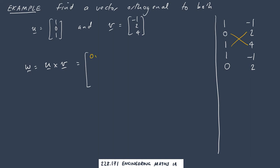In green we'll have 1 times negative 1 minus 1 times 4.